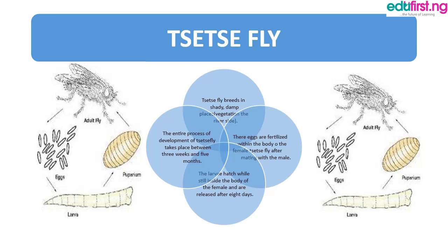Next is the tsetse fly. The tsetse fly breeds in shady, damp places — vegetation and riversides. The eggs develop inside the body of the female tsetse fly after mating. The larvae hatch while still inside the body of the female and are released after hatching. The entire process of development of a tsetse fly takes between three weeks and five months.